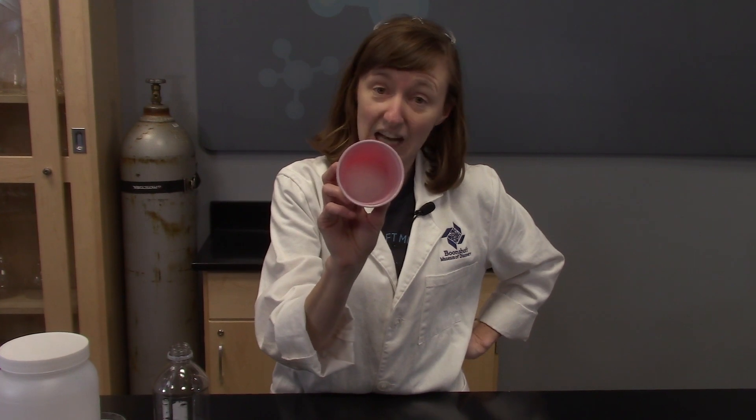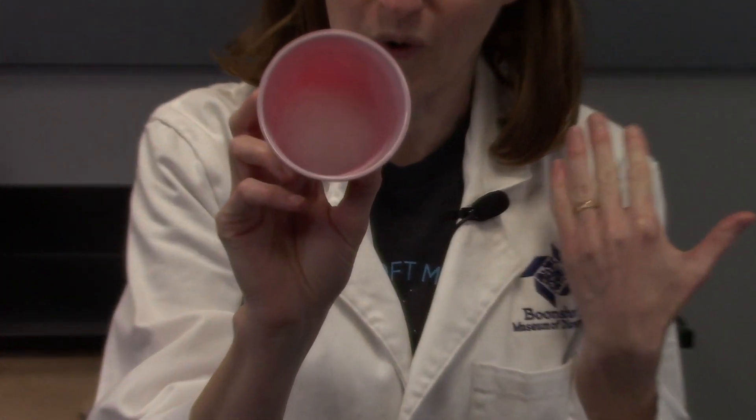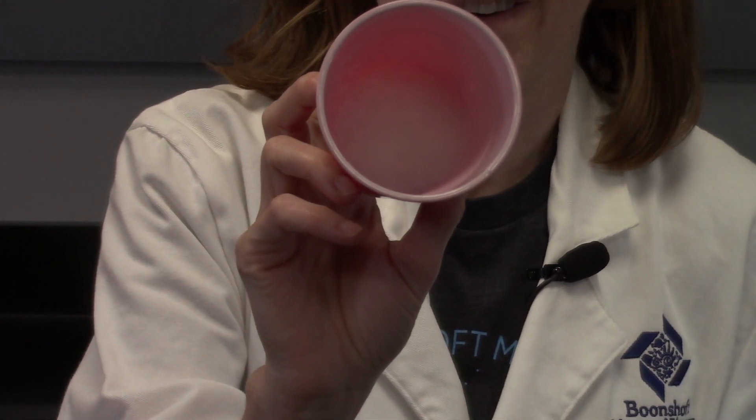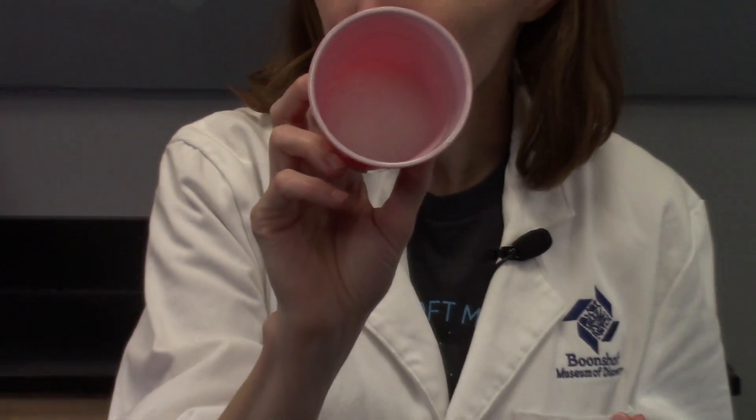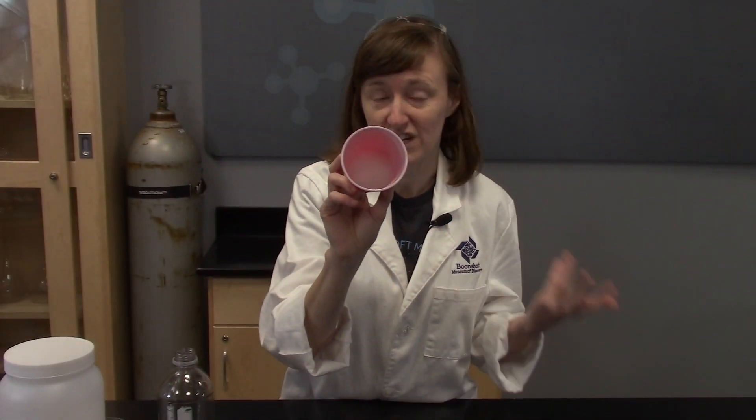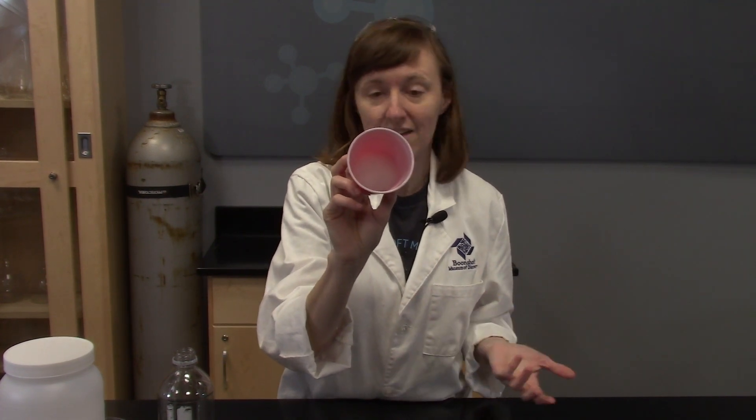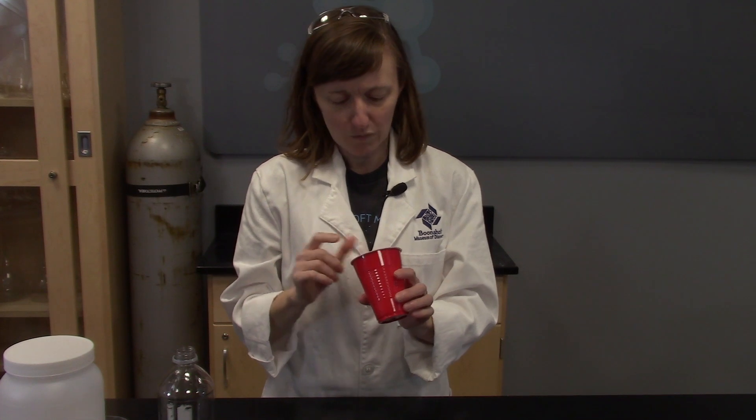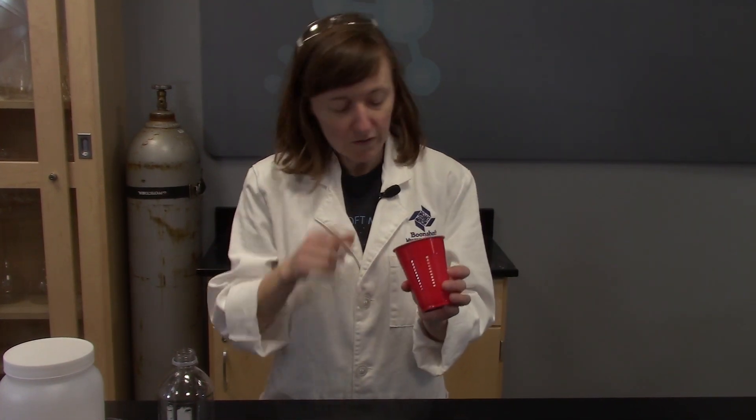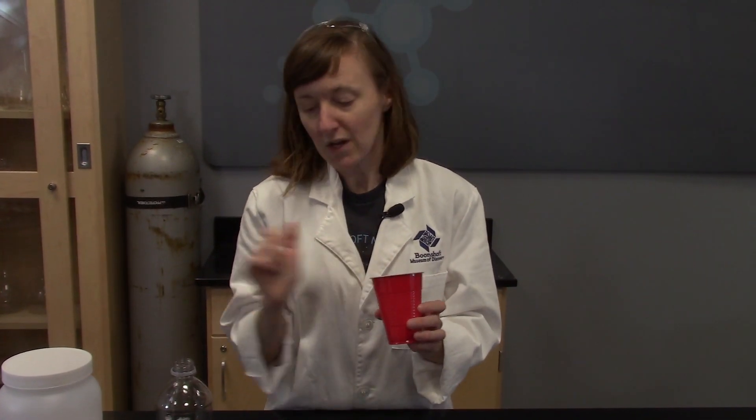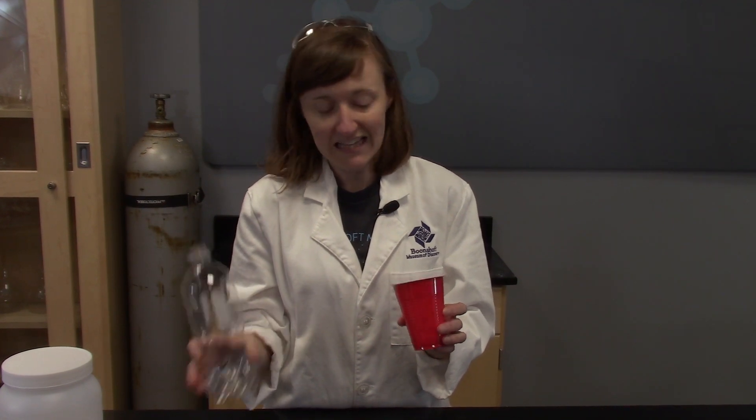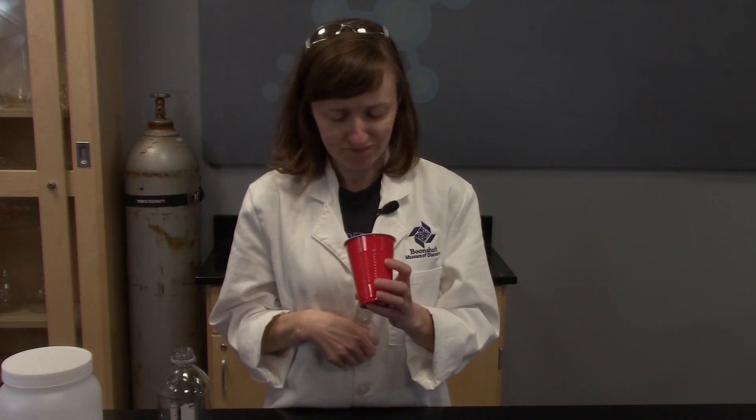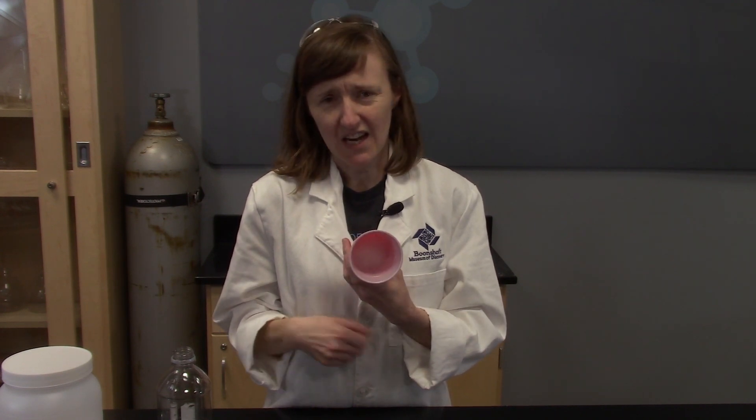You see, inside the cup is this really cool stuff that is a super absorbent polymer. I know that's a really fancy word - basically a polymer is a bunch of chains of molecules together kind of having their party thing. But this stuff here is what you find in baby diapers. So somebody put this in my cup so that when I poured water in there, the water would be absorbed or soaked up and I can't drink it.